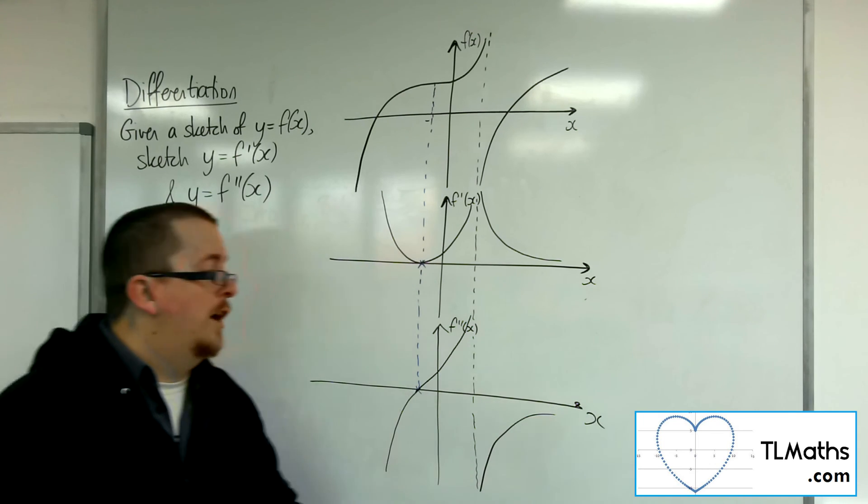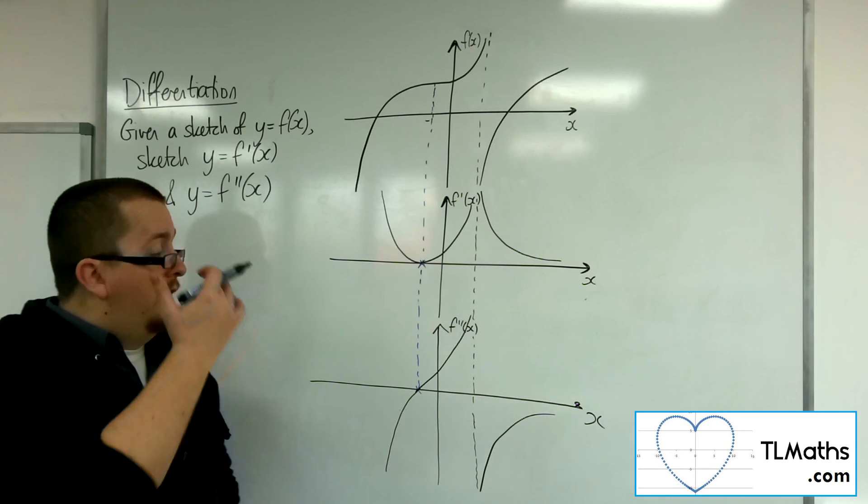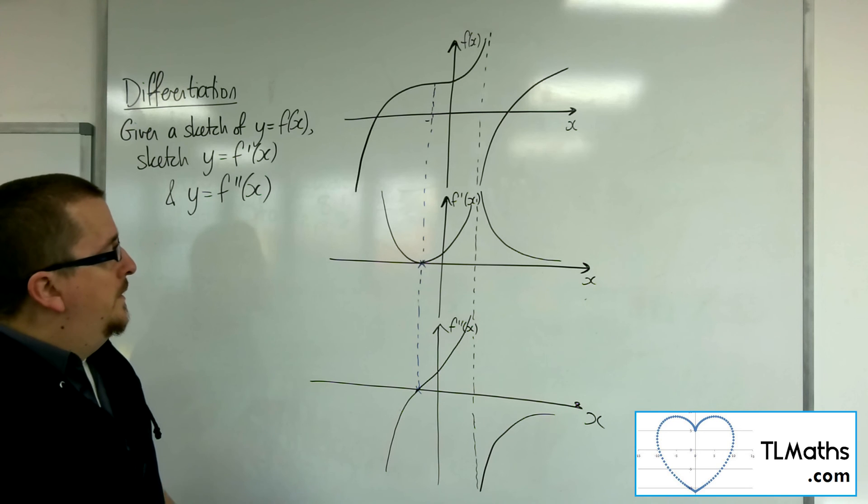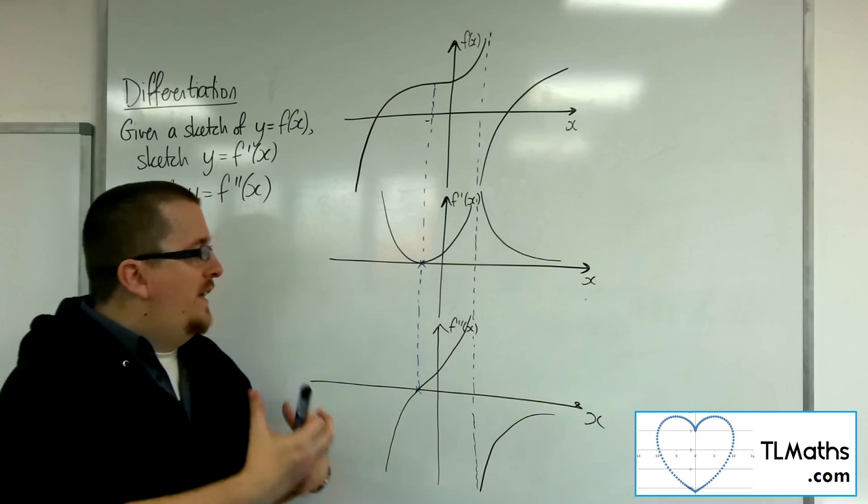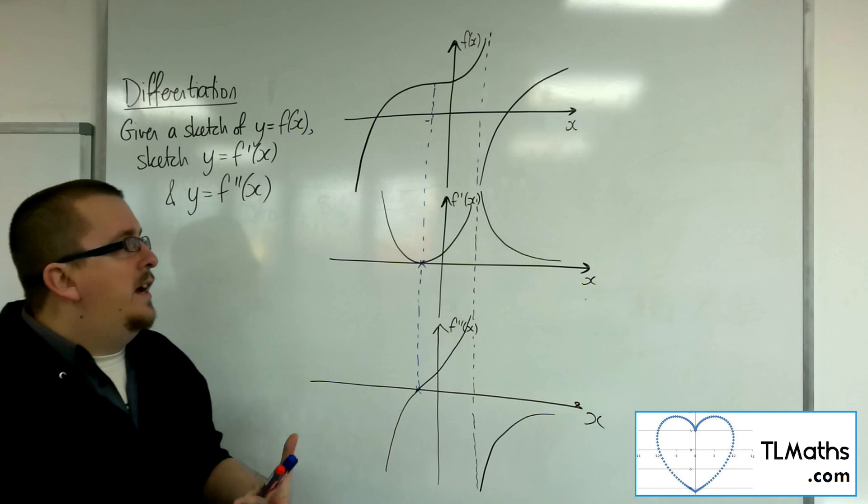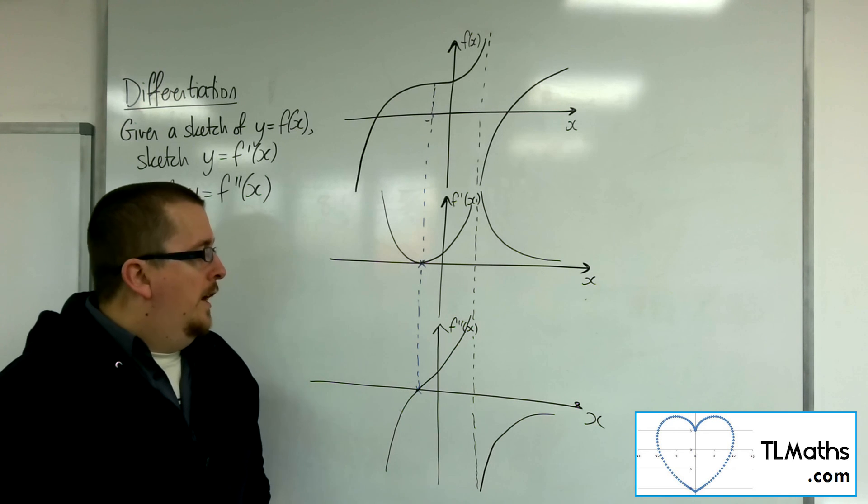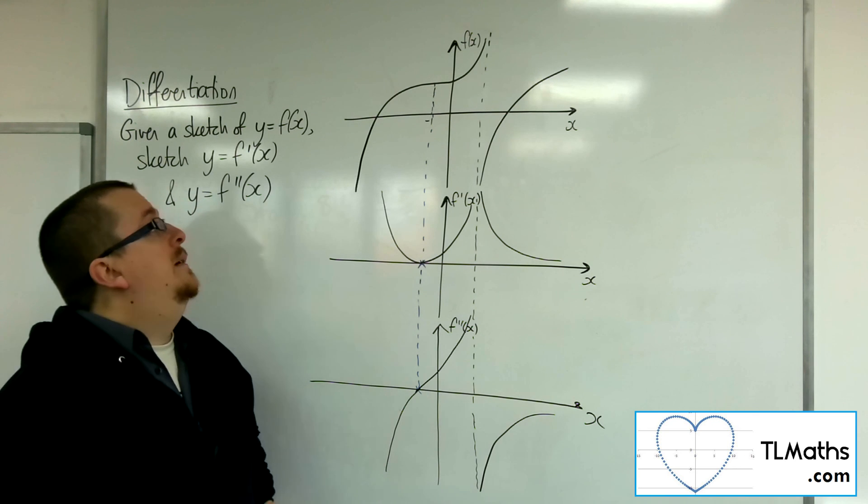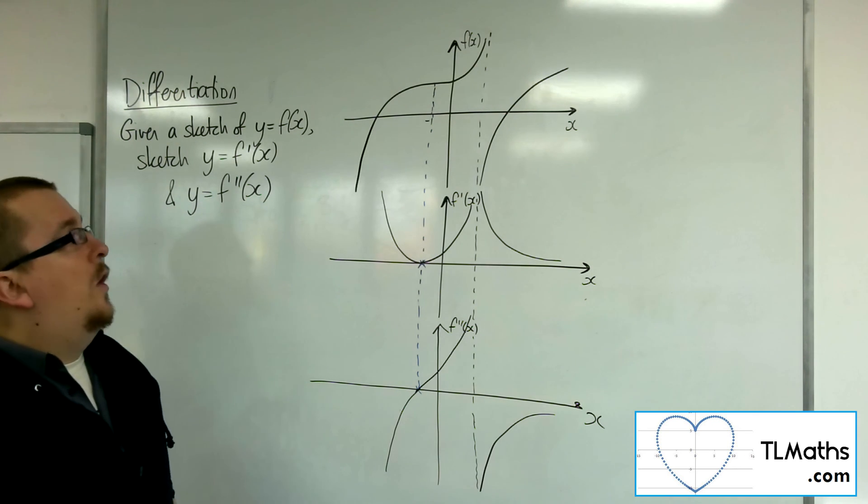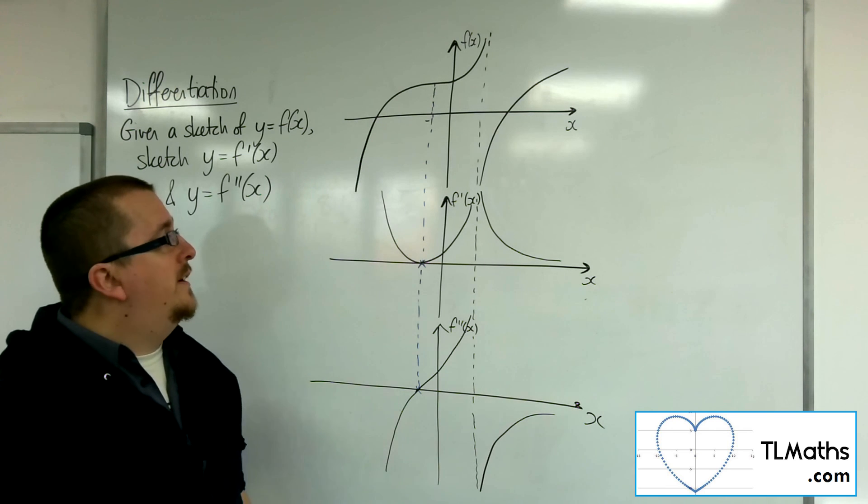And beyond that point, we really don't know enough about the curve to really go any further. So that's how we deal with a vertical asymptote and thinking about what these curves must look like. And obviously, if we had the equations, we'd be able to do a little bit more analysis.